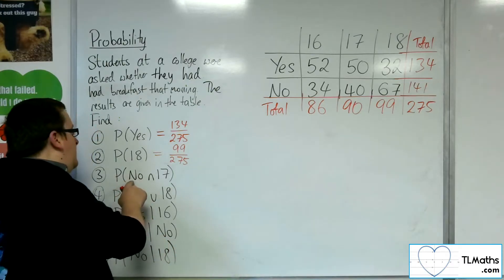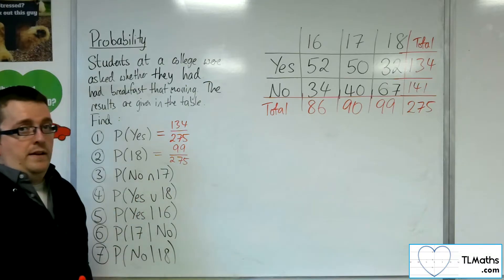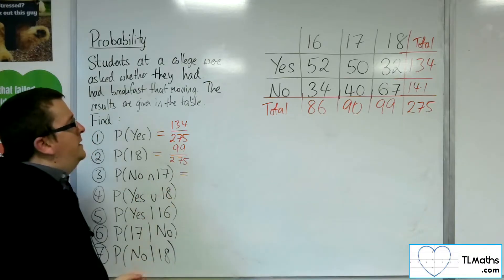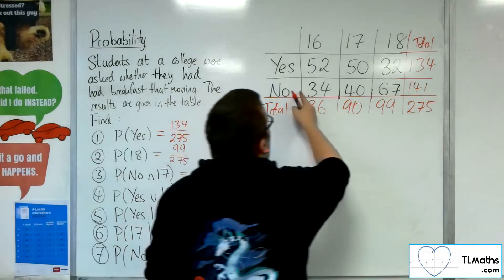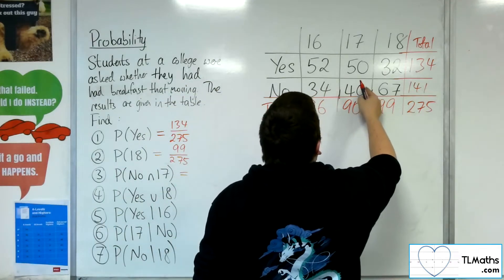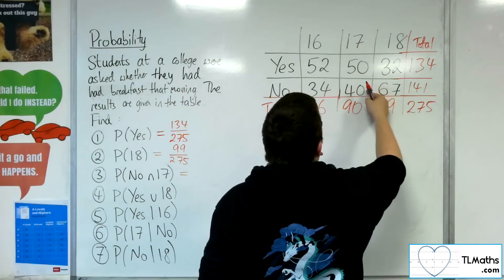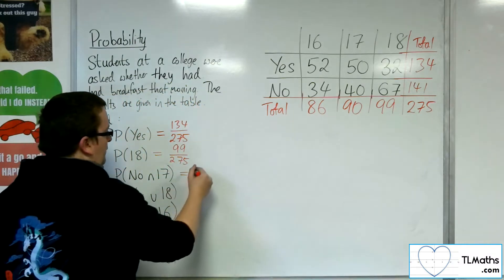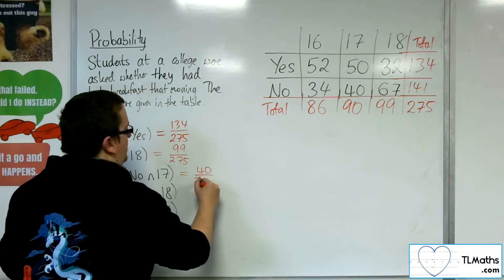Find the probability that they said no and they were 17. Okay, so no and 17 is the overlap of that column and that row. So that would be 40 students out of the 275.